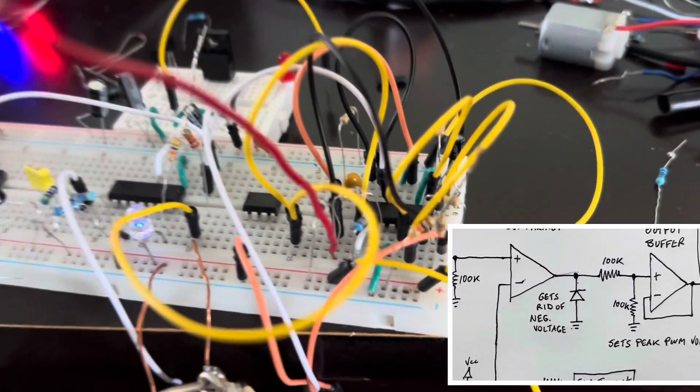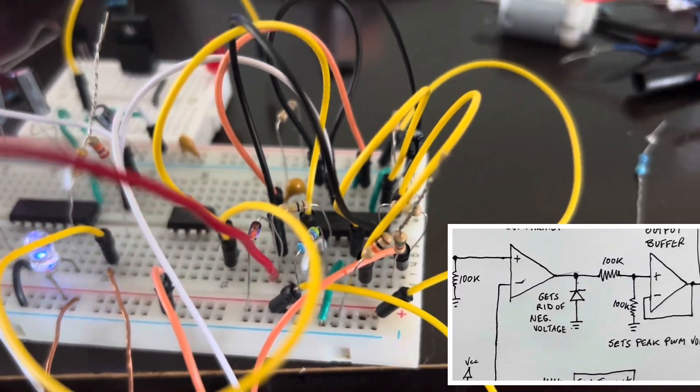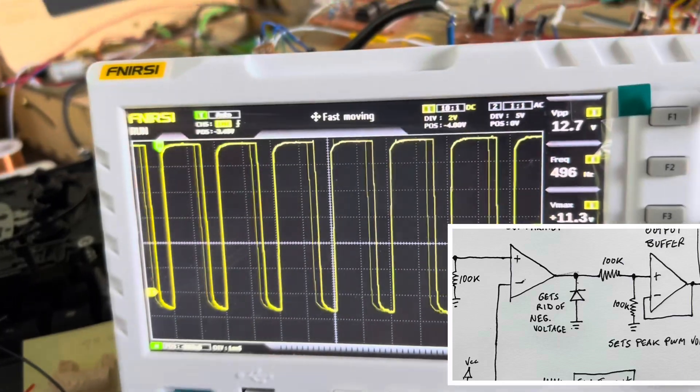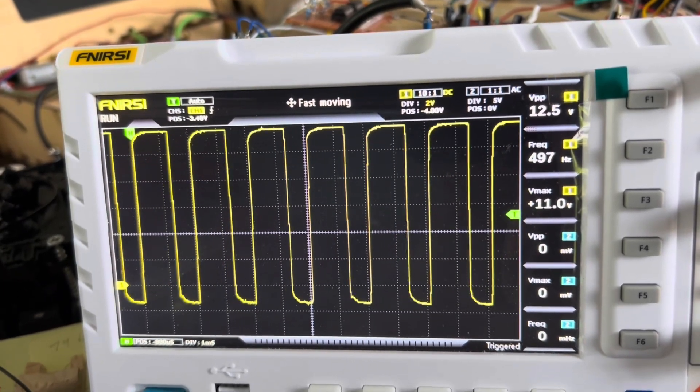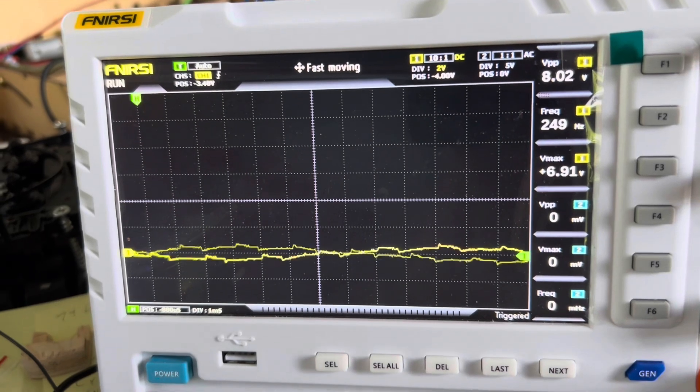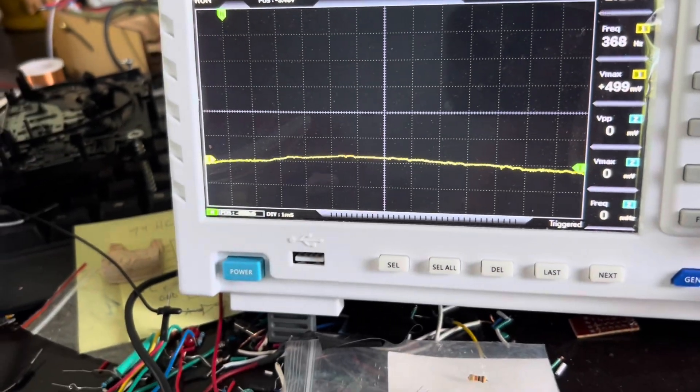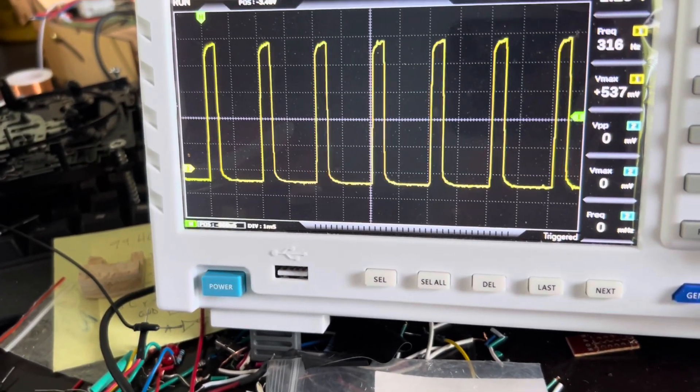So the diode is right there. And so that takes away the negative voltage. And it goes to a maximum of 12 volts. And then it goes through a voltage divider. And it gets output to here.